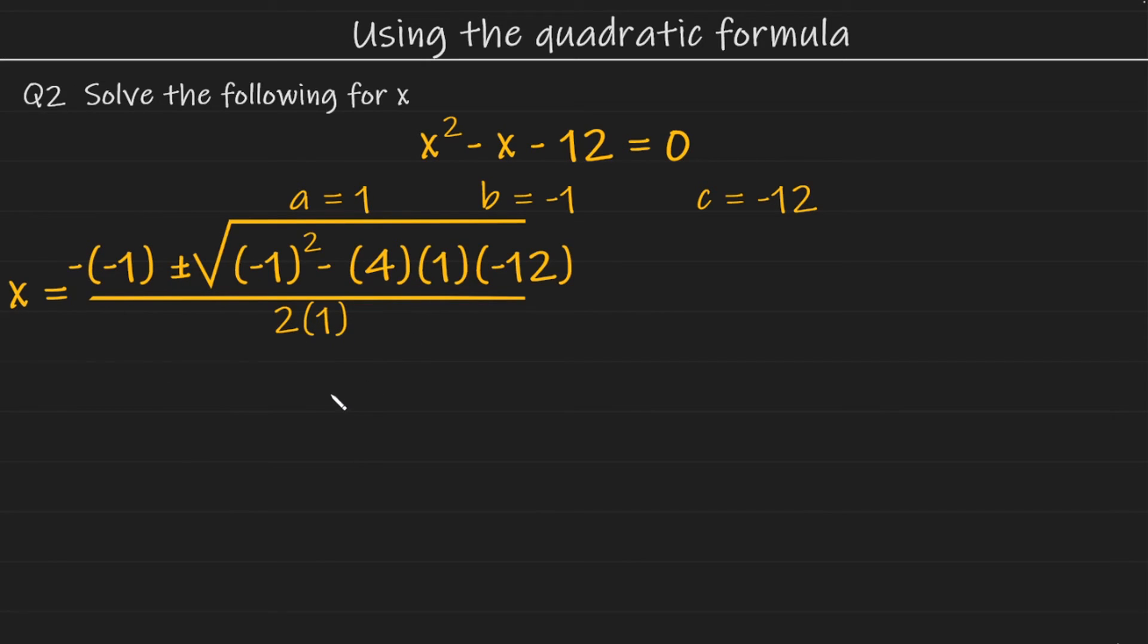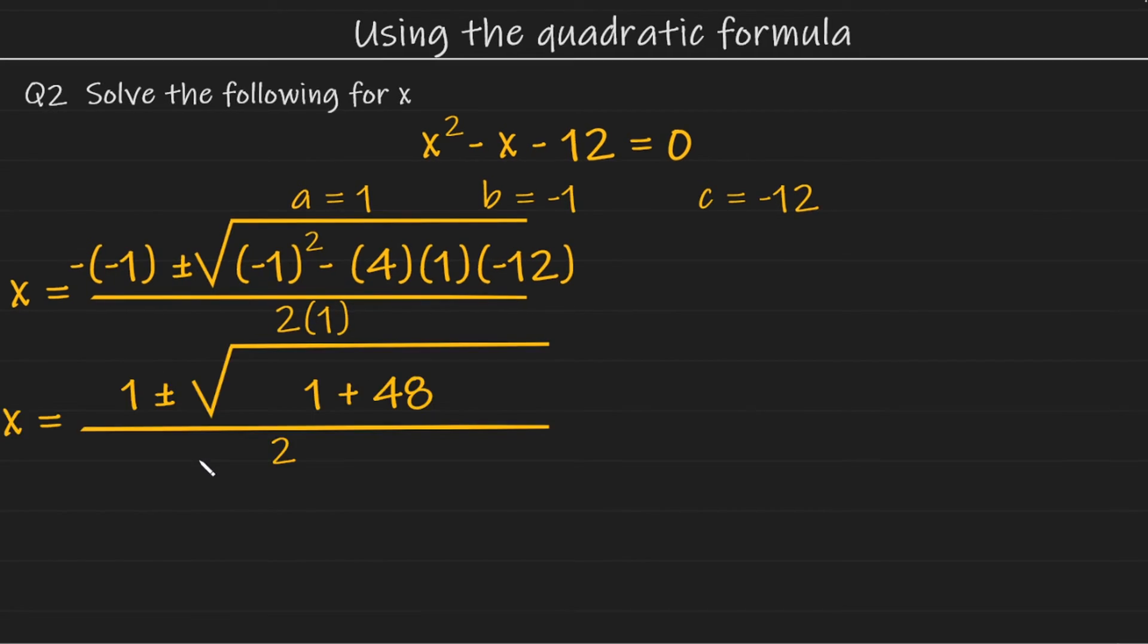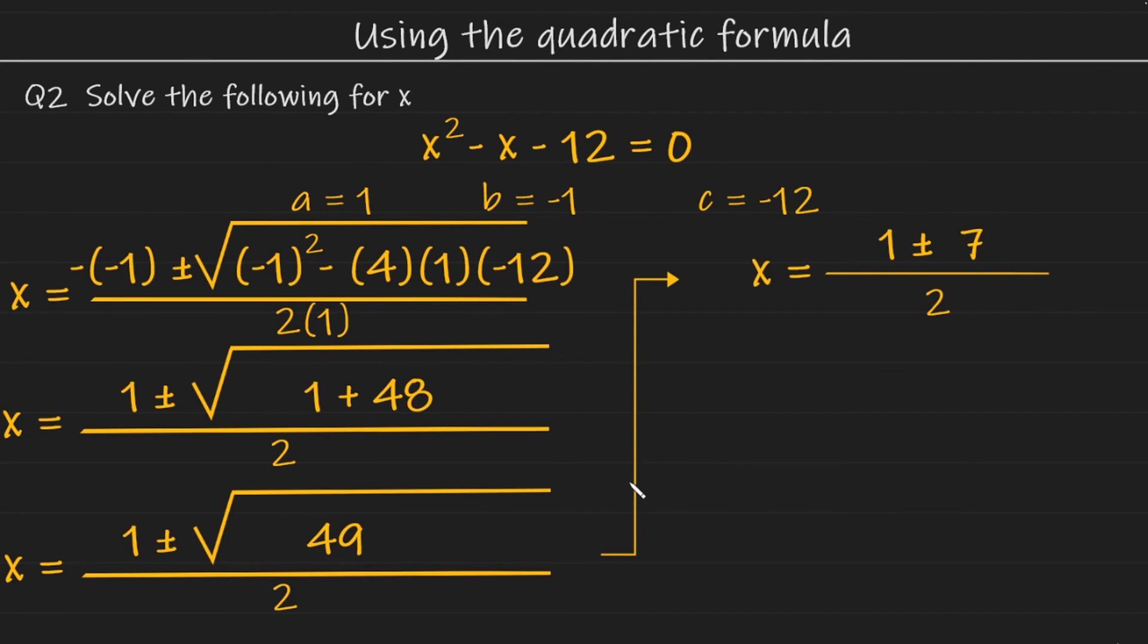So calculating and simplifying all of that gives us the following. And now if we simplify this further, 1 plus 48 gives us 49. And the square root of 49 is something we should be able to do without a calculator. So our next line looks like this. 1 plus or minus the square root of 49 all over 2. And of course, the square root of 49 is 7.